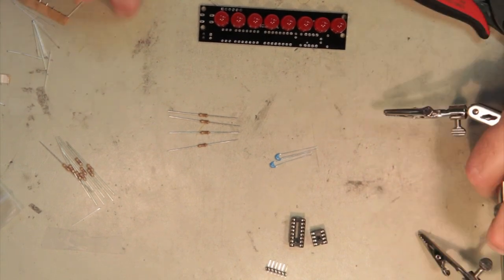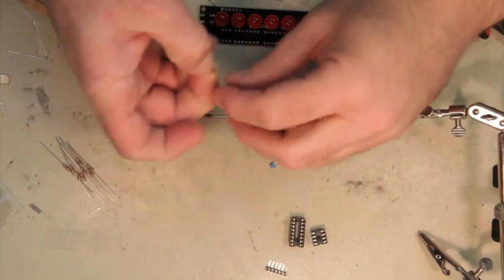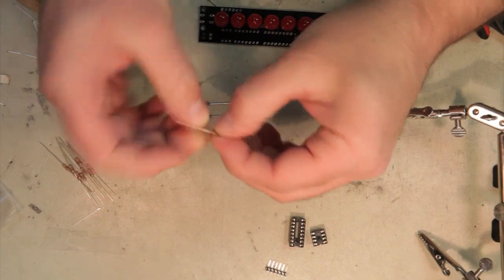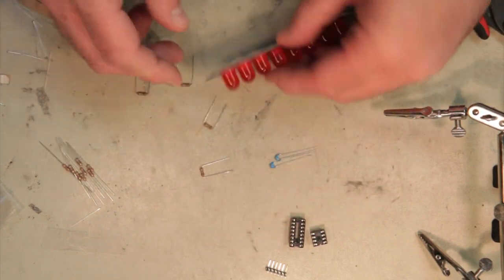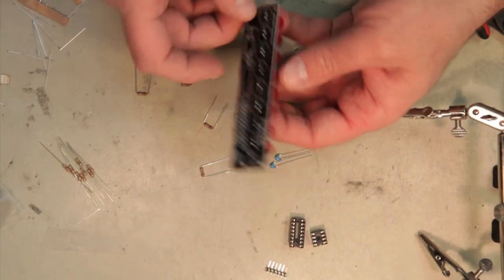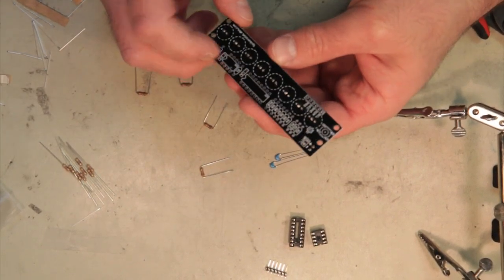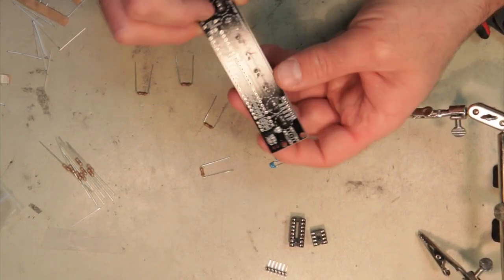You'll notice in your kit you have four resistors that are the same. We're going to prepare these for installation by bending them. These resistors are going to go into position R1, R2, R11, and R12.